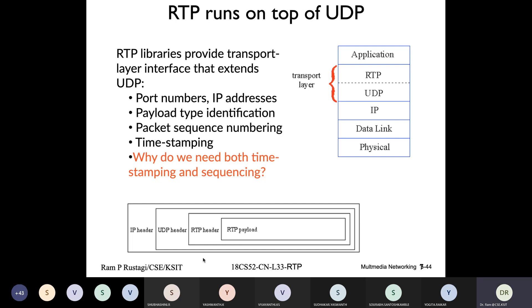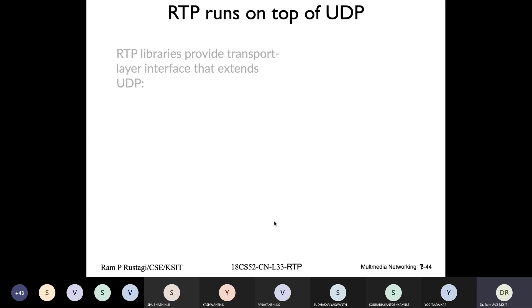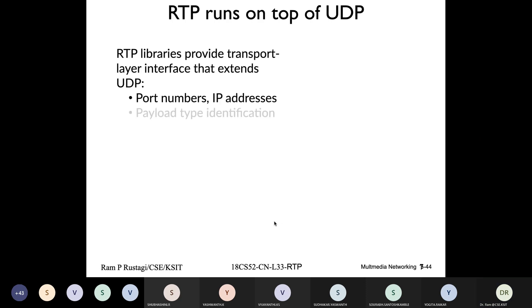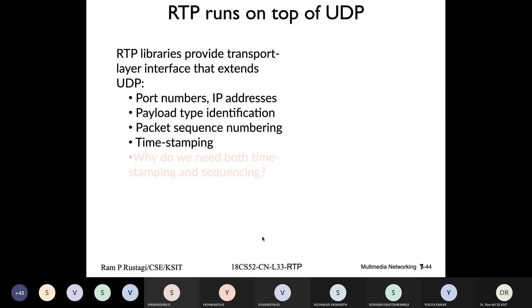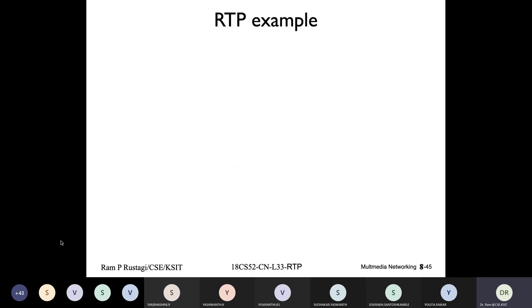This is how a packet would actually look: you have the RTP payload — the application data, meaning the actual video segment or audio segment — with the RTP header added. The whole thing becomes the payload to UDP, then a UDP header is added, then it becomes the payload to IP and gets an IP header. This is how things get transmitted, which you can also see in wire captures.